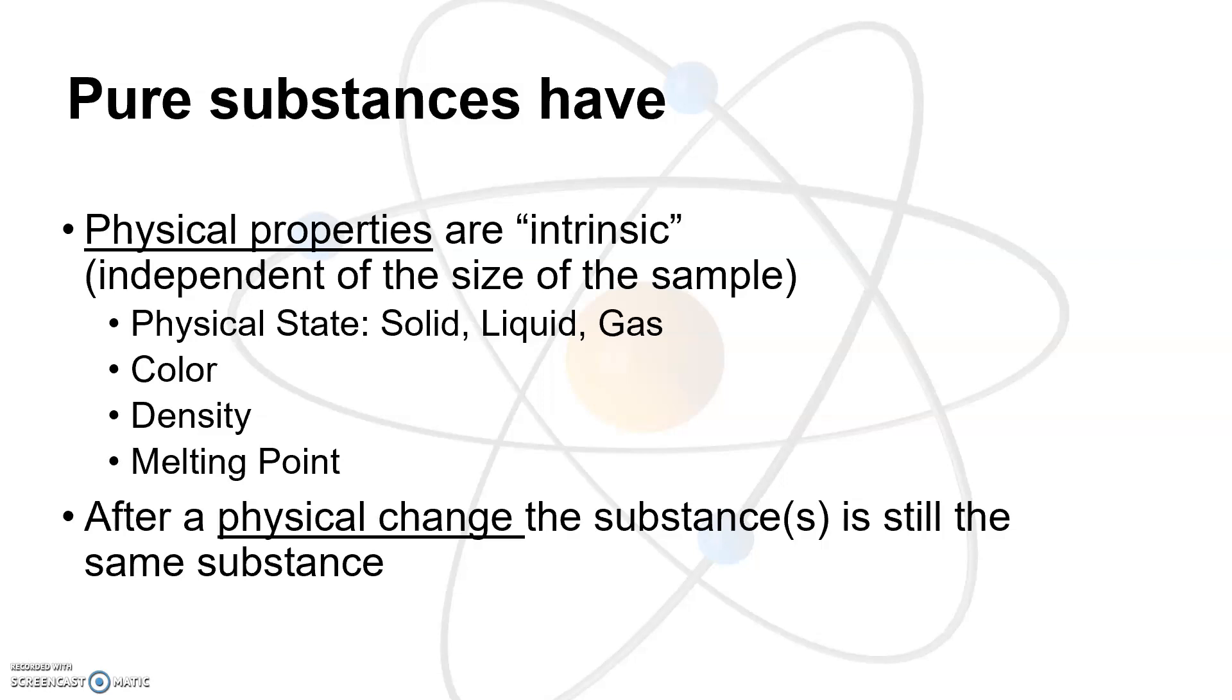If we have a physical change, and this can be a little bit confusing, if we have a physical change, the substance is still the same substance. And a really good example of this is taking an ice cube and melting it. So an ice cube is just the solid state of water. And if we melt it, we're going to the liquid state. It's still water. That's considered a physical change. Chemists use physical properties to identify what the compound or what the substance is, usually. If they have an unknown, they can melt it, and they can compare it to some table of known melting points and be able to kind of identify what it is.